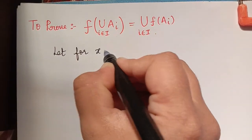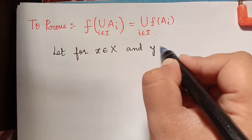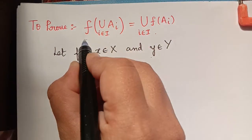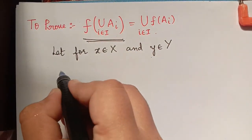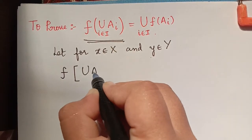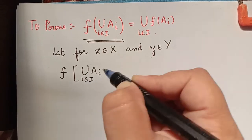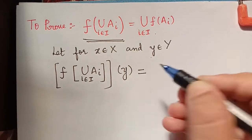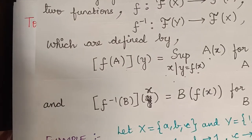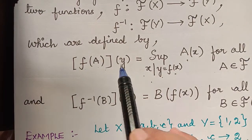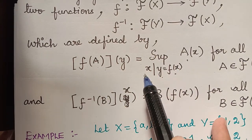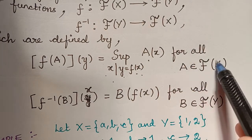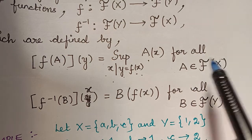Let x be an element of capital X and y an element of capital Y. We are considering a particular value y from capital Y and will work with that particular value. By the definition of the extension principle, f of A of y is equal to supremum of A of x, over x such that y equals f of x, for all fuzzy set A in the set of all fuzzy sets with respect to universal set X.